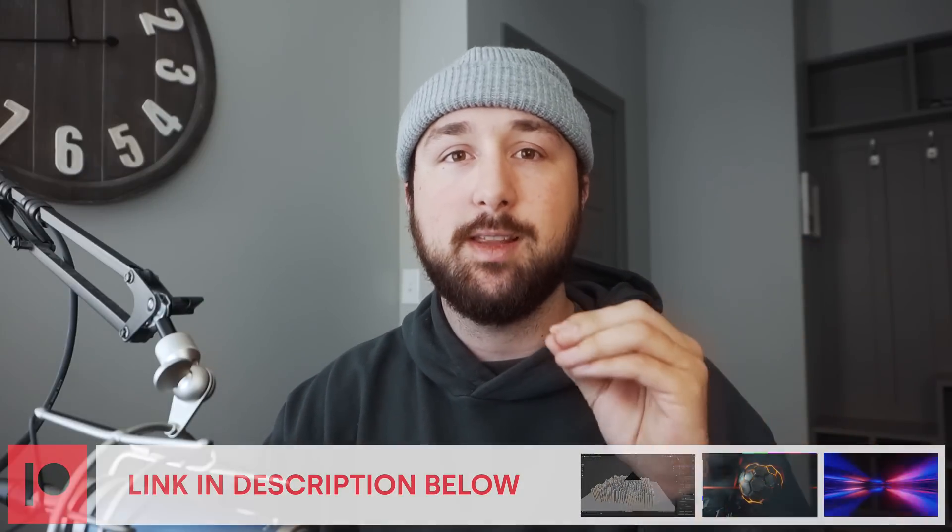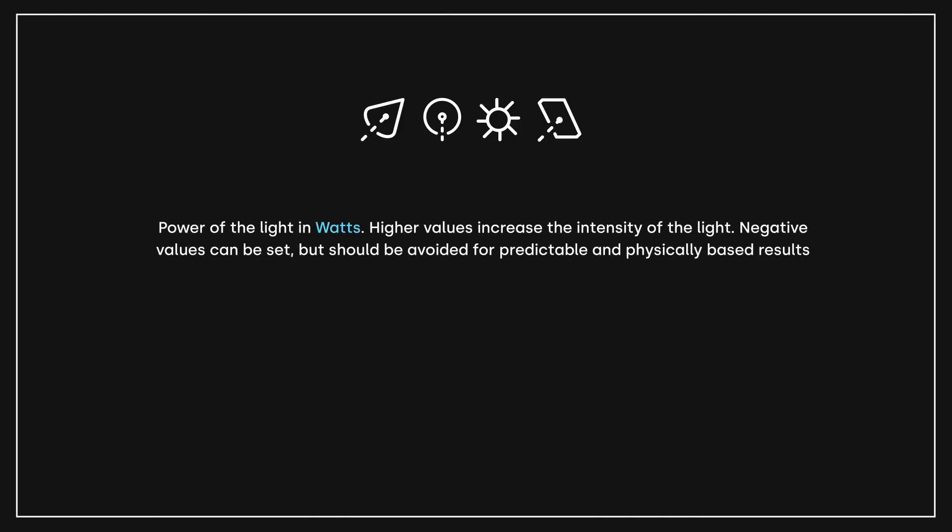The power of the point light — and all of the lights — is measured in watts. Higher values increase the intensity of the light. Negative values can be set, but you should probably avoid them if you're going for realism. This watt measurement applies to all of the Blender default lights, and if you're going for photorealism, it's important to understand exactly what's going on.